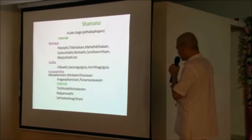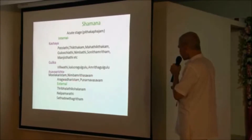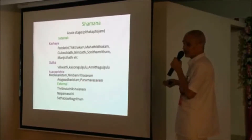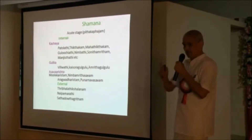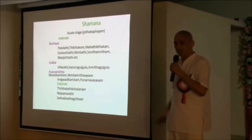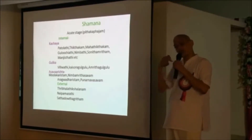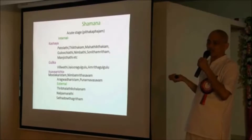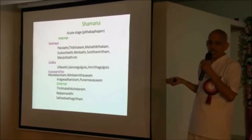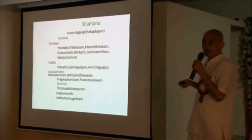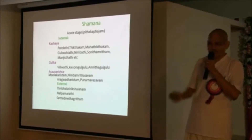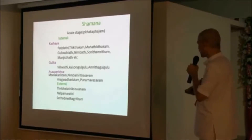For asava arishta, you can give Muladyarishta, Nimba Amrita Asava, Aragwadharishtam. All the medicine depends upon the condition. For children you can give arishta, and for adults you can give kashaya. If the kashaya is not palatable, you can give arishta. Not all medicines — only the simple, necessary medicines as per the condition.